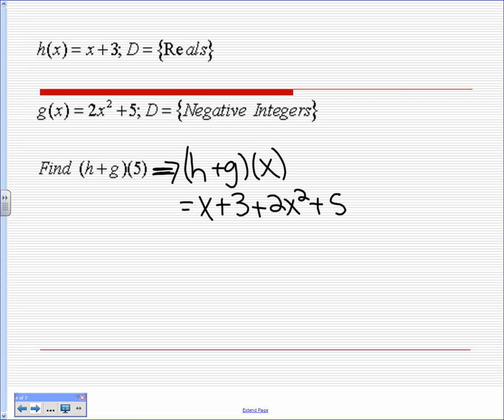Now, does that simplify? How would it simplify? Two X squared plus X. Okay, so what number are we looking for? Four.